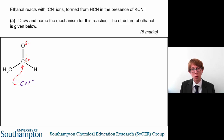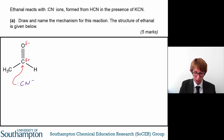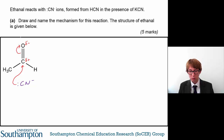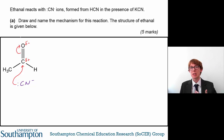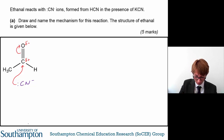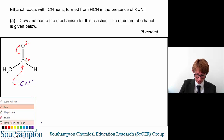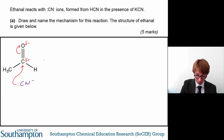The cyanide ion is going to form a bond to the electron-deficient carbon atom, and in doing this it's going to break the pi bond between the carbon and the oxygen — breaking the double bond — and this pair of electrons are going to be delocalised onto the oxygen atom. That's stage one of this mechanism.